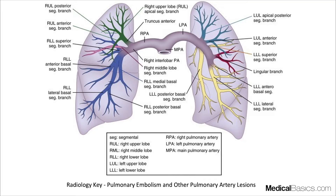Before we go into how to read a PE study and how to go over the CT anatomy of it, we need a basic understanding from a pictorial aspect of what our pulmonary artery system looks like. You're going to have your main pulmonary artery going into your right and left branches, and then many different tributaries branching into the upper, middle, and lower lobe on the right.